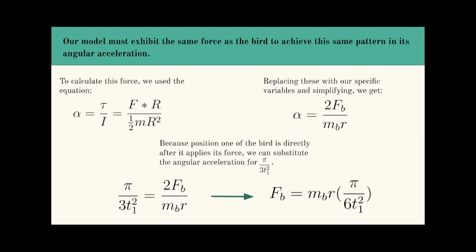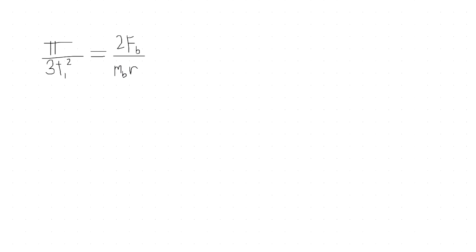Our model must exhibit the same force as the bird to achieve the same pattern in its angular acceleration. To calculate this, we use the equation α = τ/I. The equation for torque is F×r, and inertia is 1/2 mr². By replacing these with our specific variables, we get α = 2F_b/(m_b r). Because position one is directly after the bird applies its force, we can substitute the angular acceleration for π/(3t_1²).